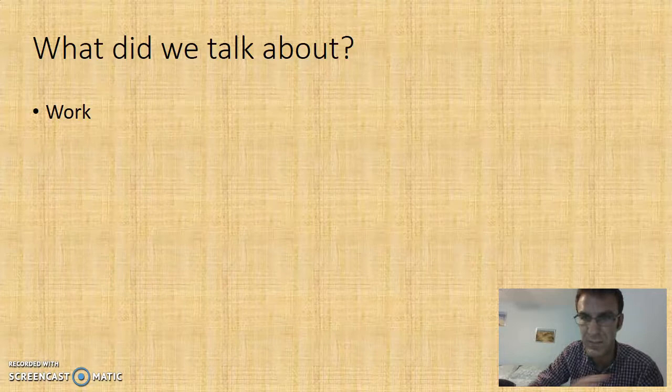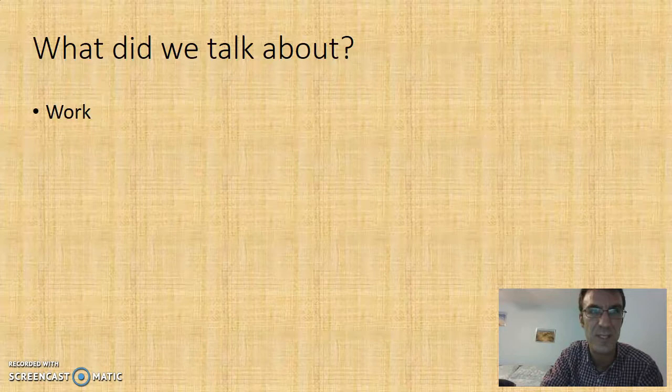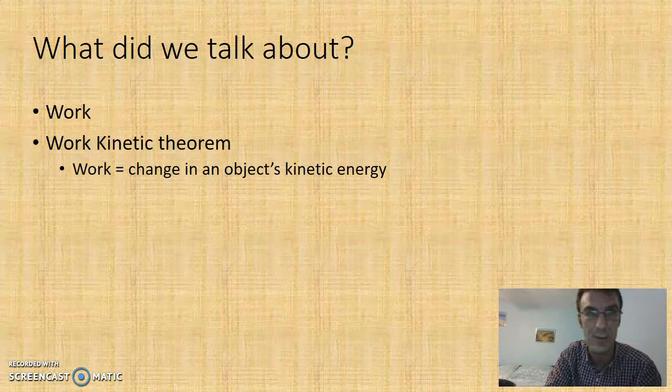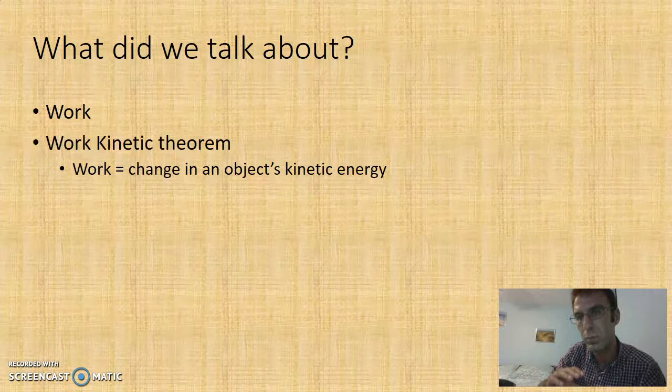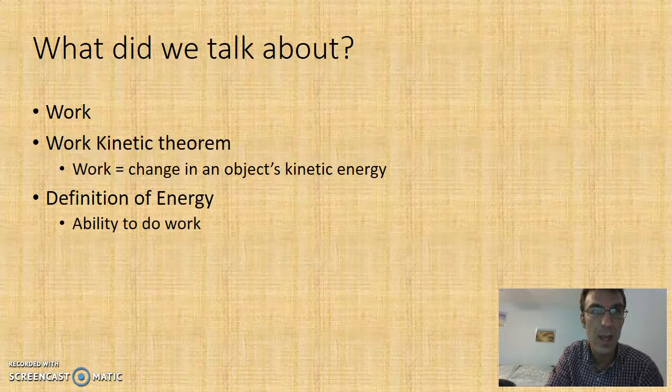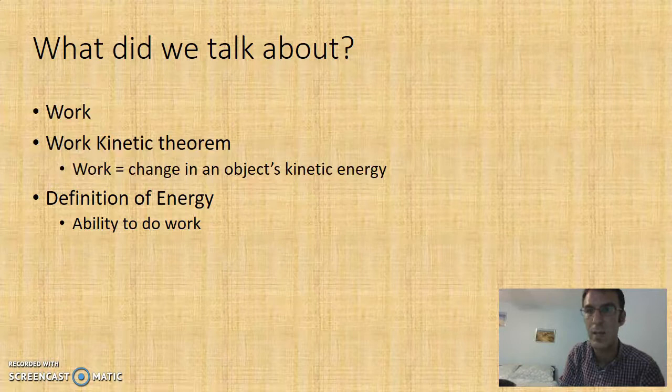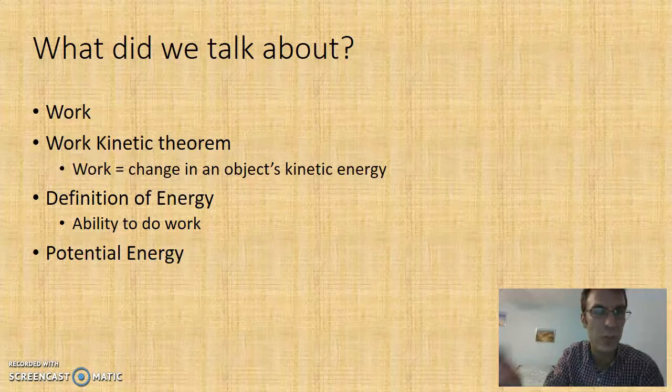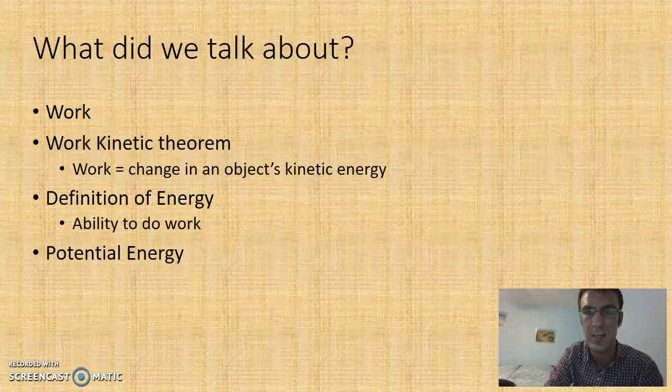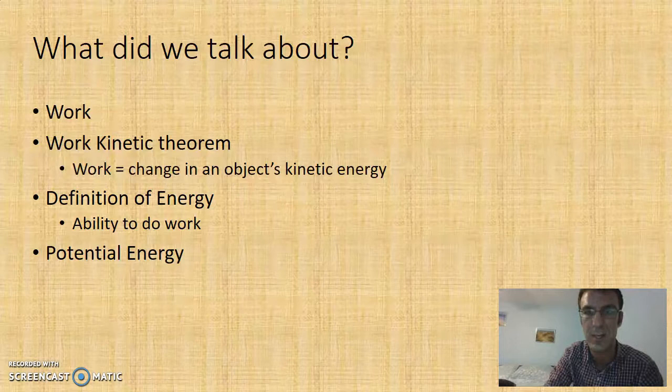Let's go over what we talked about today. We revised work — force times distance, measured in joules. We talked about the work-kinetic energy theorem: doing work on an object changes its kinetic energy. We defined energy as the ability to do work. And we covered potential energy — the energy an object has in a gravitational field, calculated as mass times gravity times height. The questions in class shouldn't be too bad, and I'll be there to help if you get stuck.